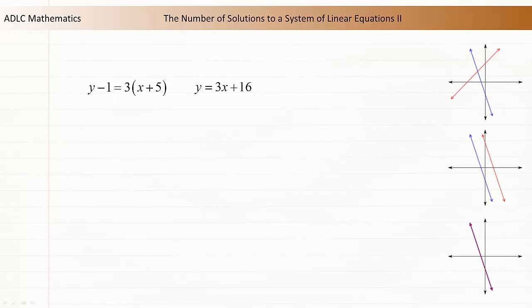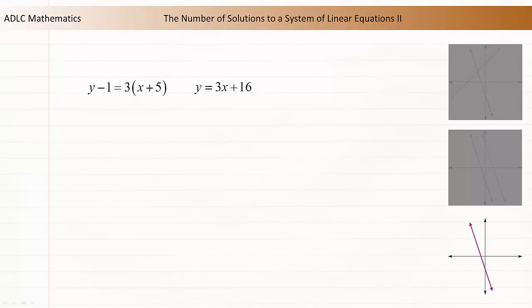In lesson 8.1, we saw that these two equations were equivalent, so the lines were coincident and there were an infinite number of solutions to this system. Let's try solving this system algebraically.